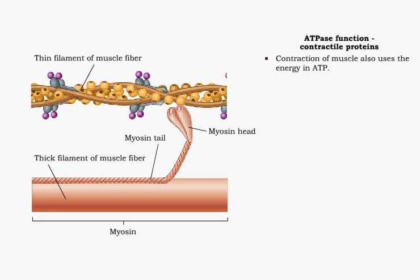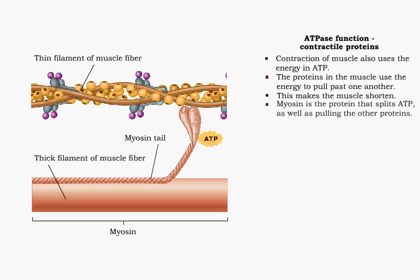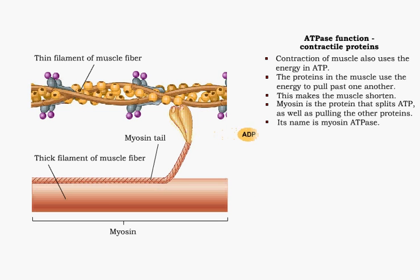Another use of the energy in ATP is in the contraction of muscle. Proteins in the muscle pull past one another. The energy for their movement comes from ATP. As they move past one another, the muscle shortens. Myosin is the protein that splits ATP. It is also responsible for the pulling. It is therefore called myosin-ATPase.